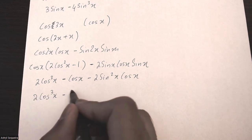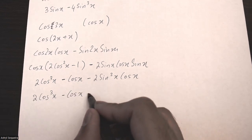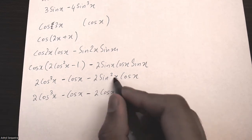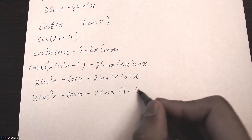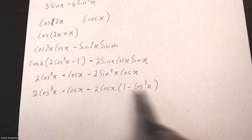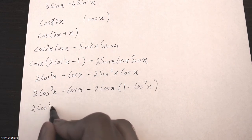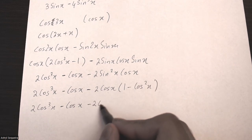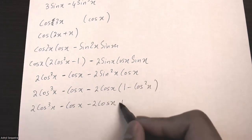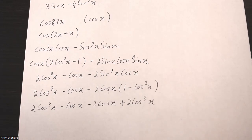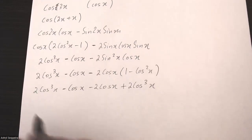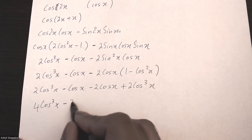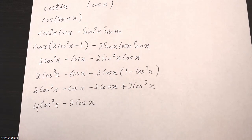So I'll get 2 cos cubed x minus cos x. And here I'll have minus sin squared x and cos x. Then I'm going to replace sin squared x with 1 minus cos squared x. I'll write the 2 cos x first, then replace sin squared x with 1 minus cos squared x and multiply into the bracket. That gives minus 2 cos x plus 2 cos cubed x. Finally combining like terms: 2 cos plus 2 cos cubed is 4 cos cubed x, and combining the remaining terms gives negative 3 cos x.